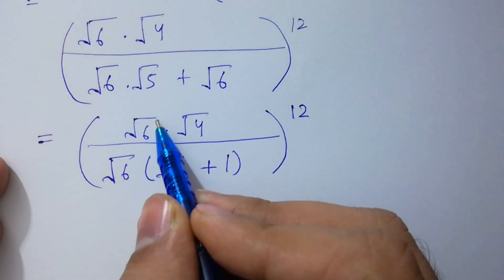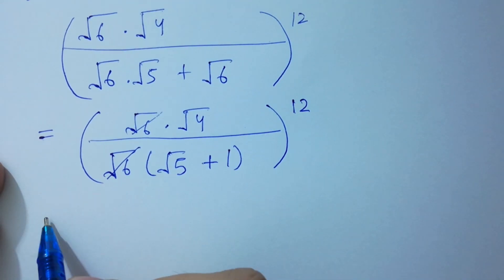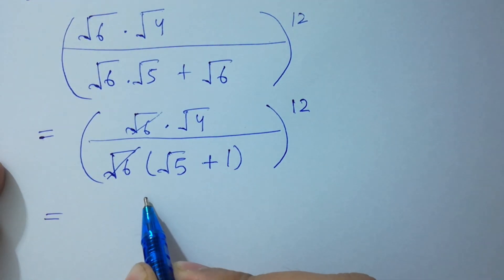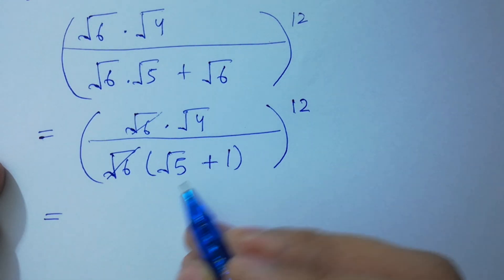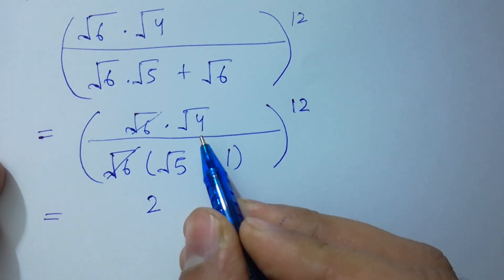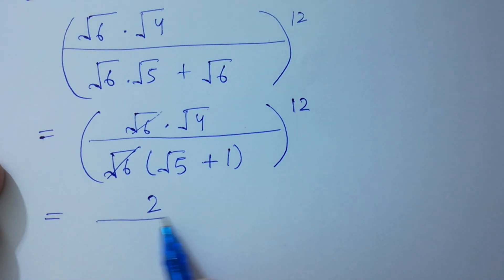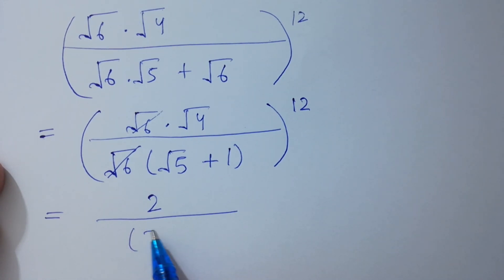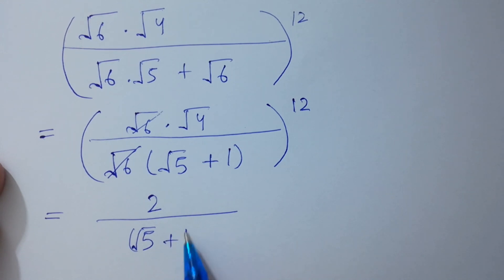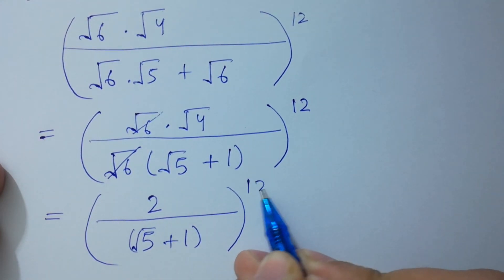Square root of 6 and square root of 6 will be cancelled. We have square root of 4, which is 2, since 2 squared is 4. So we get 2 over (square root of 5 plus 1), to the whole power 12.